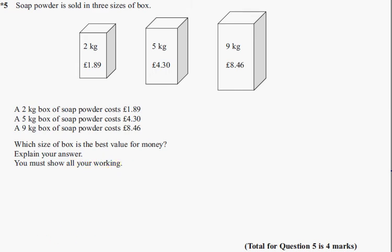So there's two ways of doing this, but I'm going to do it this way. I'm going to work out how much 1kg costs in each of these sizes. I'm going to start with the smallest one. So 2kg is £1.89.